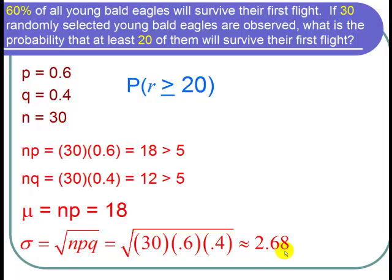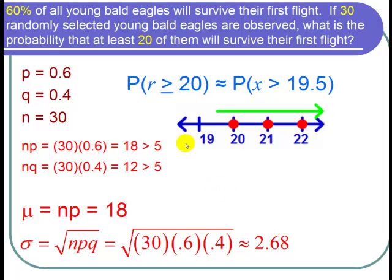Now let's apply the continuity correction that tells us that if we want the probability that r is greater than or equal to 20—notice that includes 20, 21, 22, all the way up to 30—and greater than or equal to 20 in that case is the same as greater than 19. So we do the compromise and say this is about equal to the probability that x is greater than 19.5.